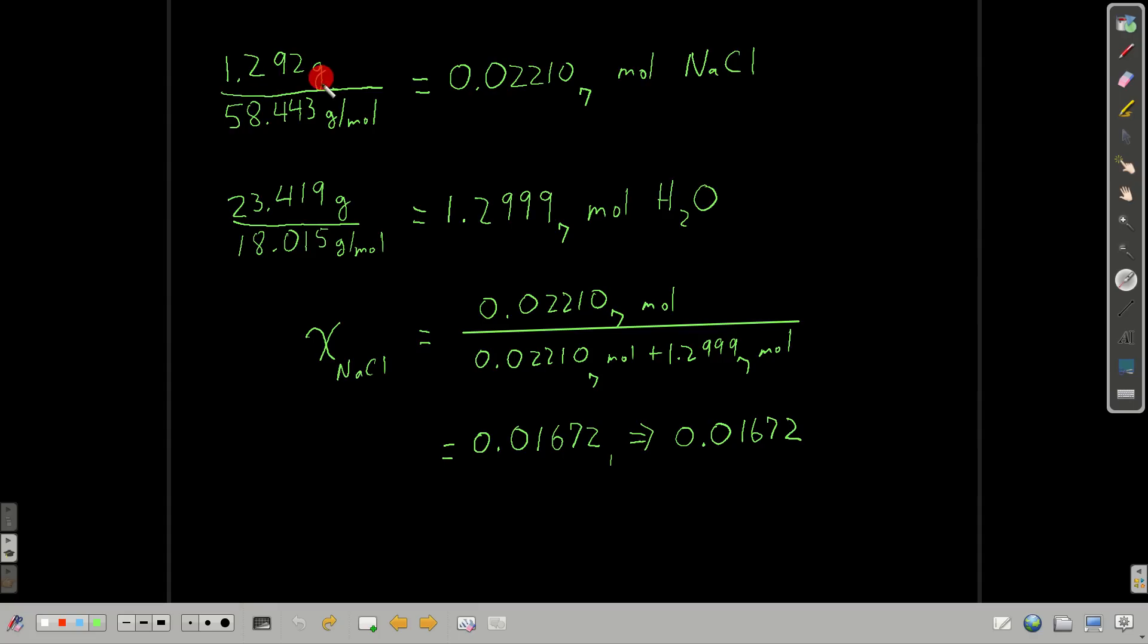So, remember, 1.292 grams of sodium chloride. 58.443 is what I got for the molar mass of sodium chloride. That gives us that many moles of sodium chloride. That goes in the top here. The water, 23.419 grams divided by the molar mass of water. It gives us moles of water. So, the mole fraction of sodium chloride is just the moles of sodium chloride divided by the sum of the moles of both of these. We have 4 sig figs. When we add them, we keep 4 past the decimal, which is 5 sig figs. So, we're going to round to 4 sig figs. I get 0.01672. There's no units. It's just a number.